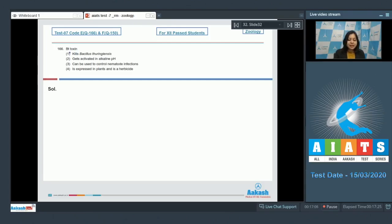Question number 166: BT toxin. Number one, 'kills Bacillus thuringiensis' is absolutely incorrect, as Bacillus thuringiensis is the source bacterium. This BT toxin does not affect Bacillus thuringiensis as here it is in the form of protoxin.